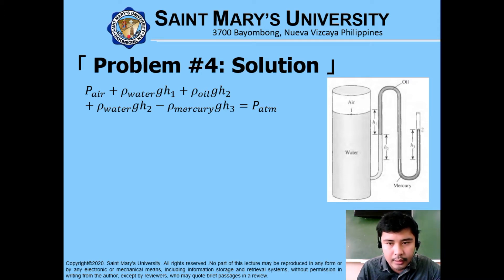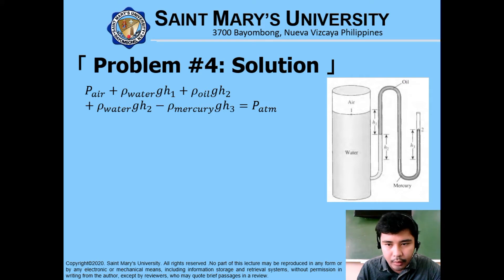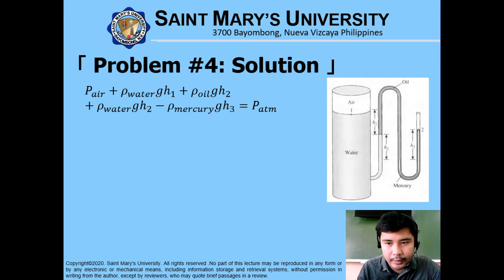Similarly, from this point we are going downward again, which explains the positive sign — the pressure is increasing — going to the mercury part under H2 height. Then from this point, we are going upward. That explains the negative part of this equation, so the pressure is decreasing by a factor of rho·g·h. Finally, we equate the last part with P2, the atmospheric pressure.